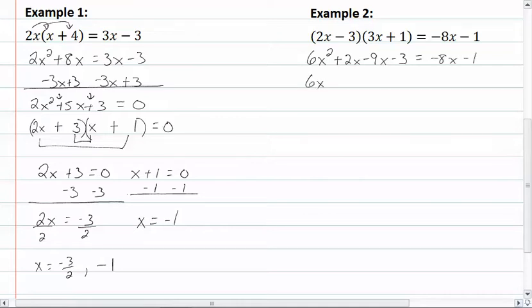So we now have 6x squared, minus 7x, minus 3, equal to negative 8x, minus 1. Now we get everything on one side. So we're going to add 8x, and add 1.